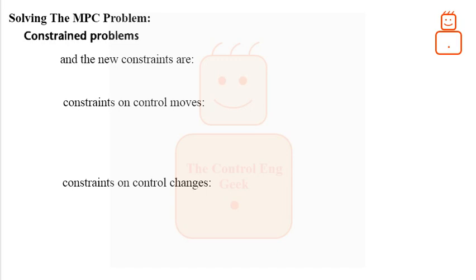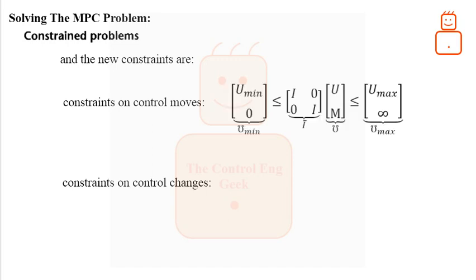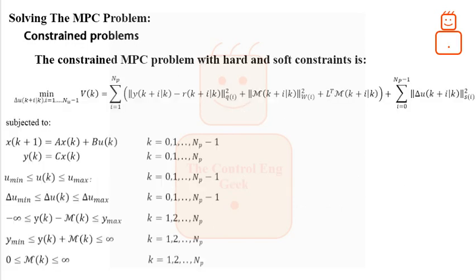The new MPC problem requires a slight change in the way we have formulated the previous constraints. For the constraints on the control moves, we can write the following. Whereas for the control changes, we can make the following change. We have to see the formulation of the last three constraints in our MPC problem in term of the new optimization variable.